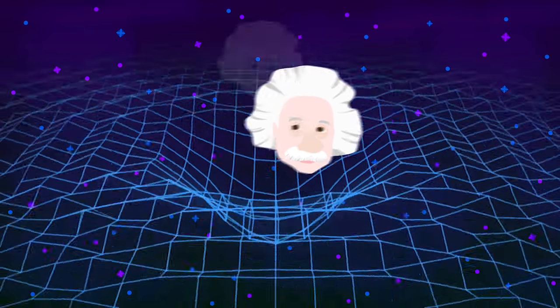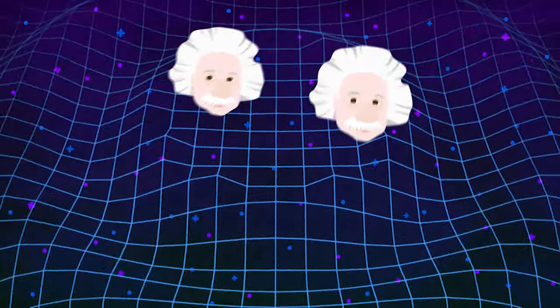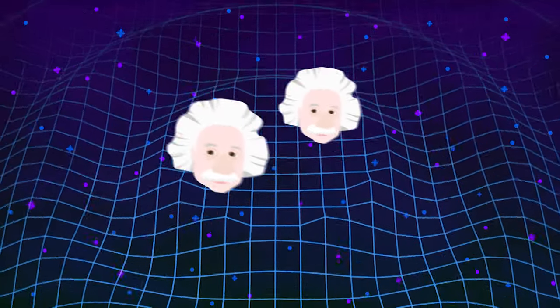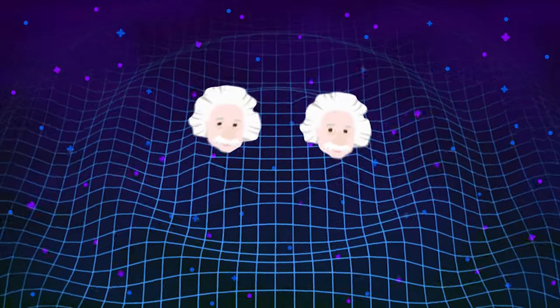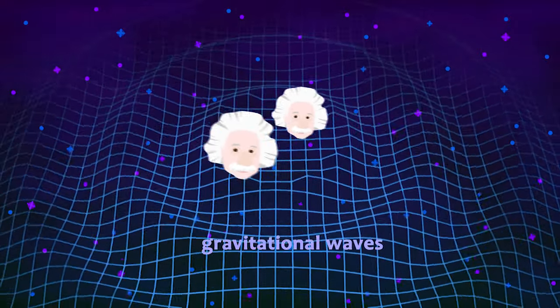It is already common wisdom among physicists since Einstein that two massive objects, such as two black holes, when moving around each other, would create tiny ripples on space. These are the famous gravitational waves.